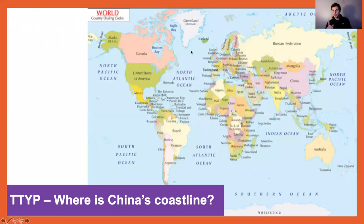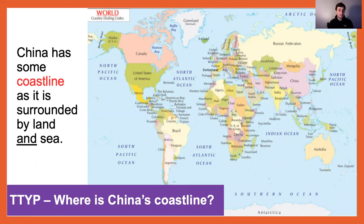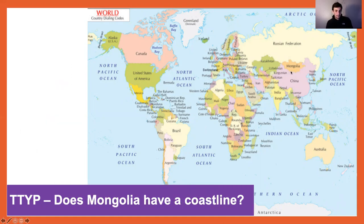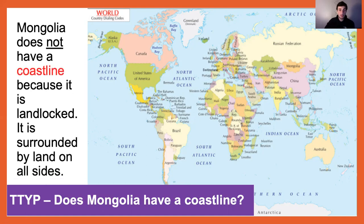Here is a map of China. What was it that we noted about China's coastline? Well done if you said that China has some coastline as it is surrounded by both land and sea — China has one main coastline down its east side, but many parts don't have a coastline at all; it neighbours Nepal, India, Kyrgyzstan, Kazakhstan, and Mongolia. Now, Mongolia — this orange country here — does not have a coastline because it is landlocked, surrounded by land on all sides. There are no opportunities to go to the beach in Mongolia; you'd have to travel into China or Russia.